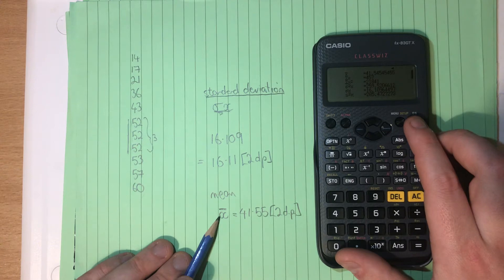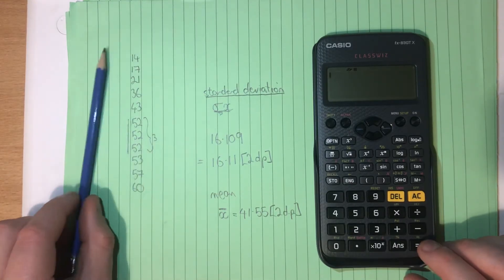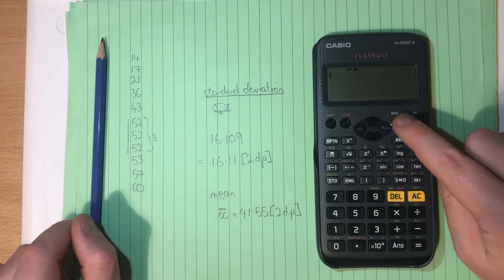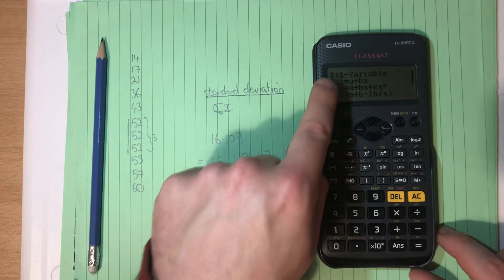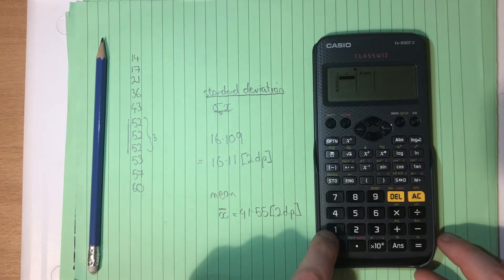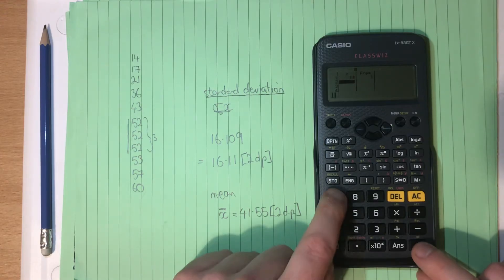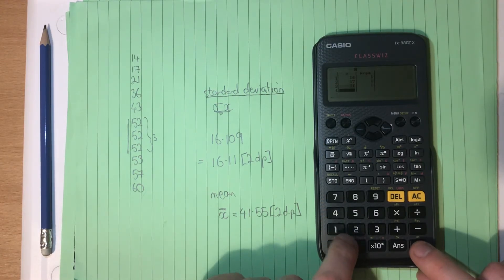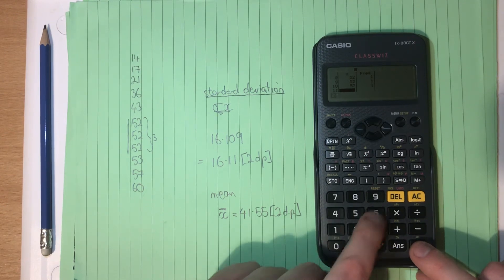So let's go through that again. This is where our calculator would normally be. To get the standard deviation, we go menu, and then we want this guy here. So we select number 2, and we want one-var. And then we input our data. So we go 14 equals, 17 equals, 21 equals, 36 equals, 43 equals, 52 equals. I could put in 52 three times if I wanted to. 53 equals, 57 equals, 60 equals.